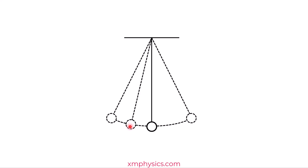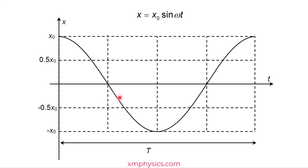Wrong! Gotcha! This graph should illustrate why. To go from the extreme position to the other extreme and back to the same original position is one period. To go from the extreme position to the other extreme position is half a period. To go from the extreme position to the equilibrium position is a quarter of a period. But to go from the extreme position to the half amplitude position is not one-eighth of a period.